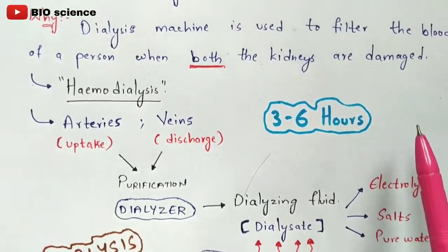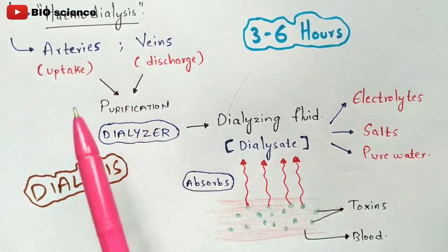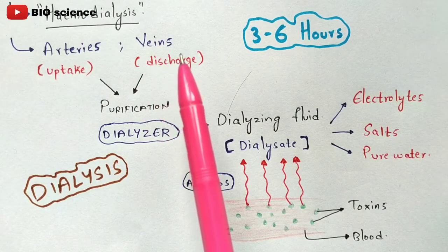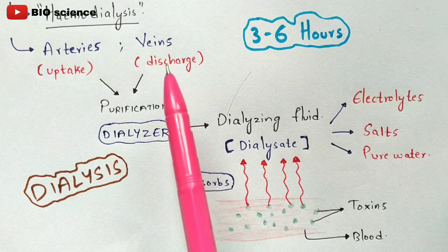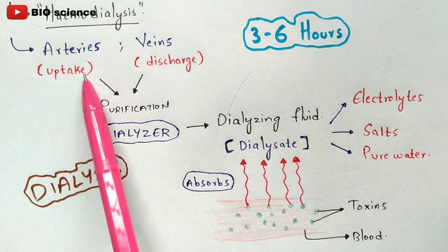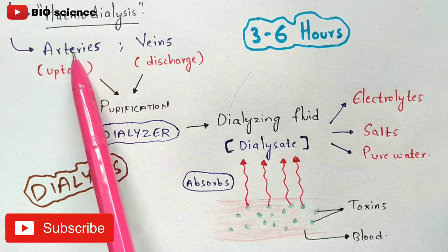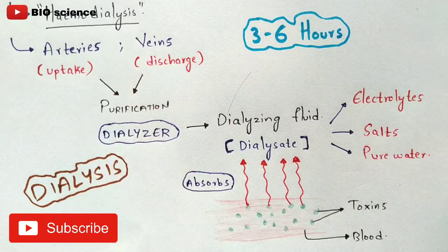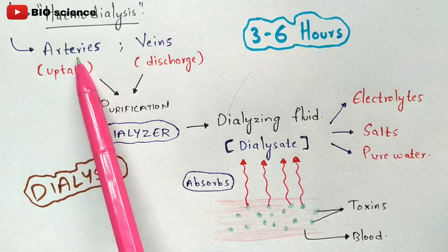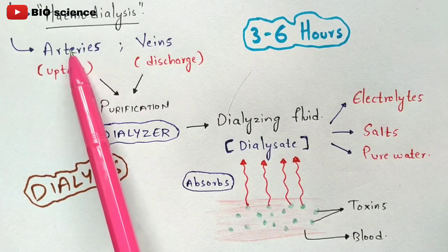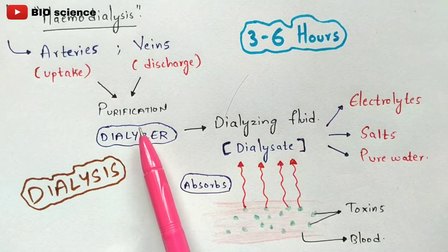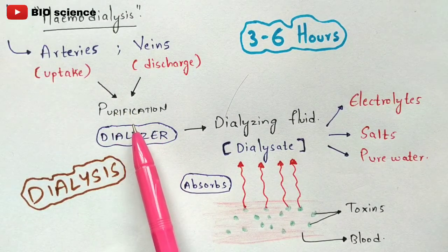Now let us discuss the dialysis process in detail. For this procedure, you select a patient whose kidneys have failed — 75 to 80 percent of their kidney function is gone. You then extract the impure blood from the arteries of the patient. The impure blood is taken from the arteries and sent into the dialyser machine, where the purification process will be done.